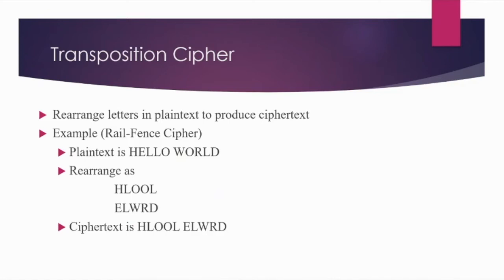Let's discuss transposition cipher. In transposition cipher, what we are doing is rearranging the letters in plain text to produce the cipher text. The property of transposition cipher is that whatever is there in the plain text, all the letters are repeated in the cipher text — the only thing is we are rearranging the letters. Rail fence cipher is a transposition cipher.